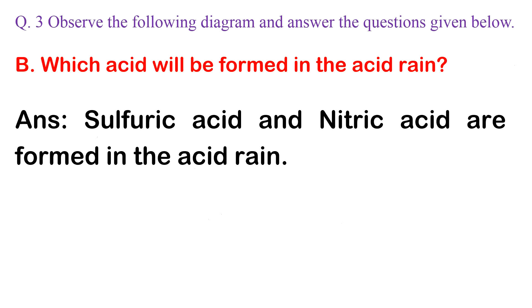B. Which acid will be formed in the acid rain? Answer: Sulfuric acid and nitric acid are formed in the acid rain.